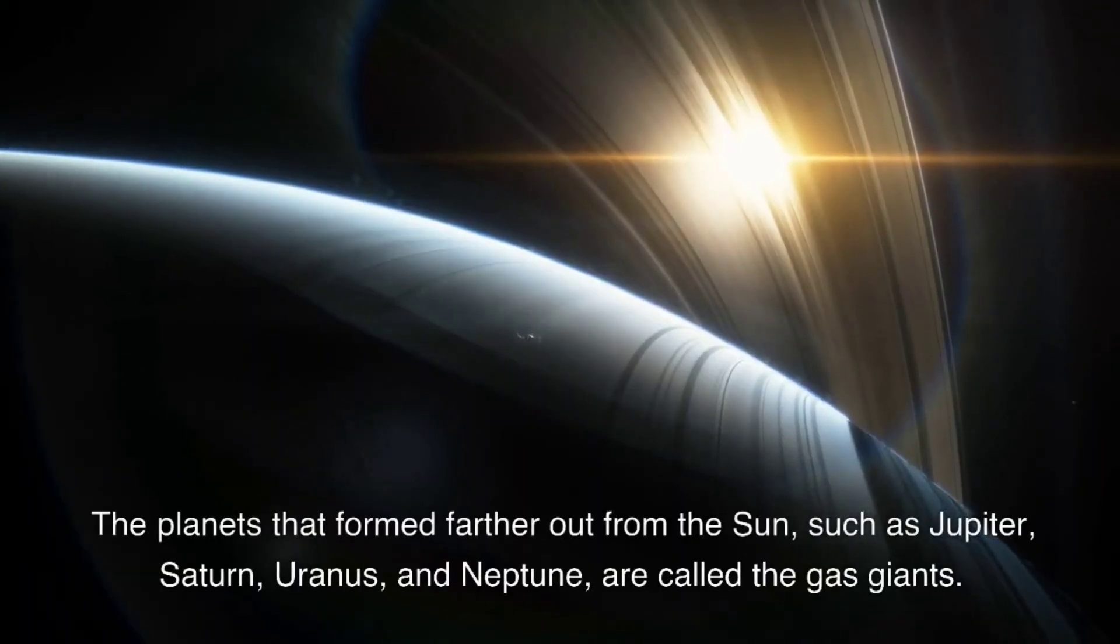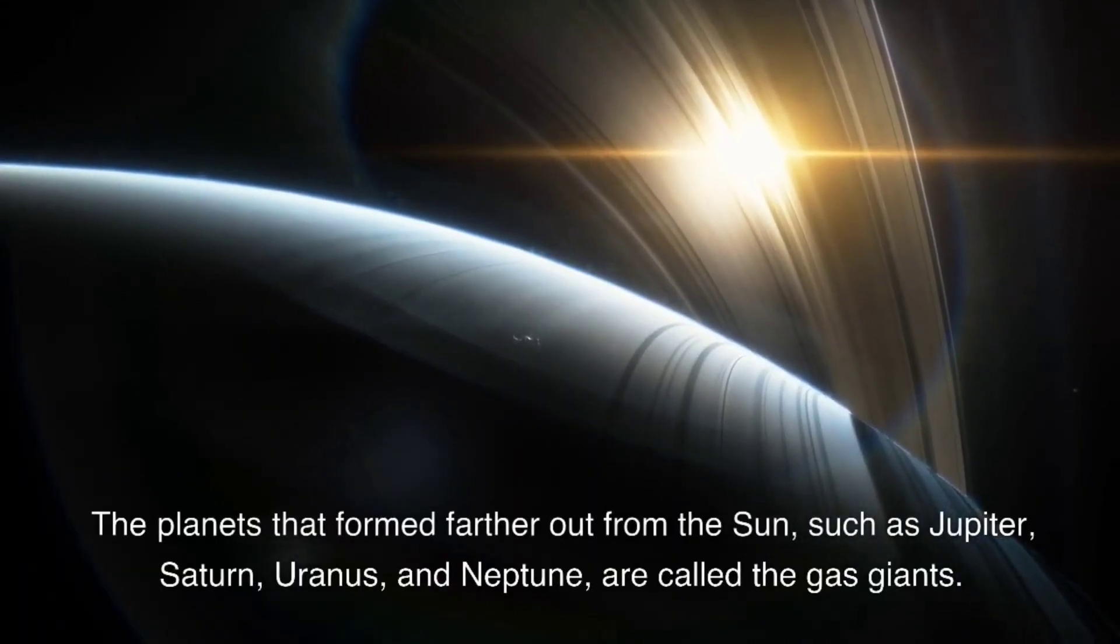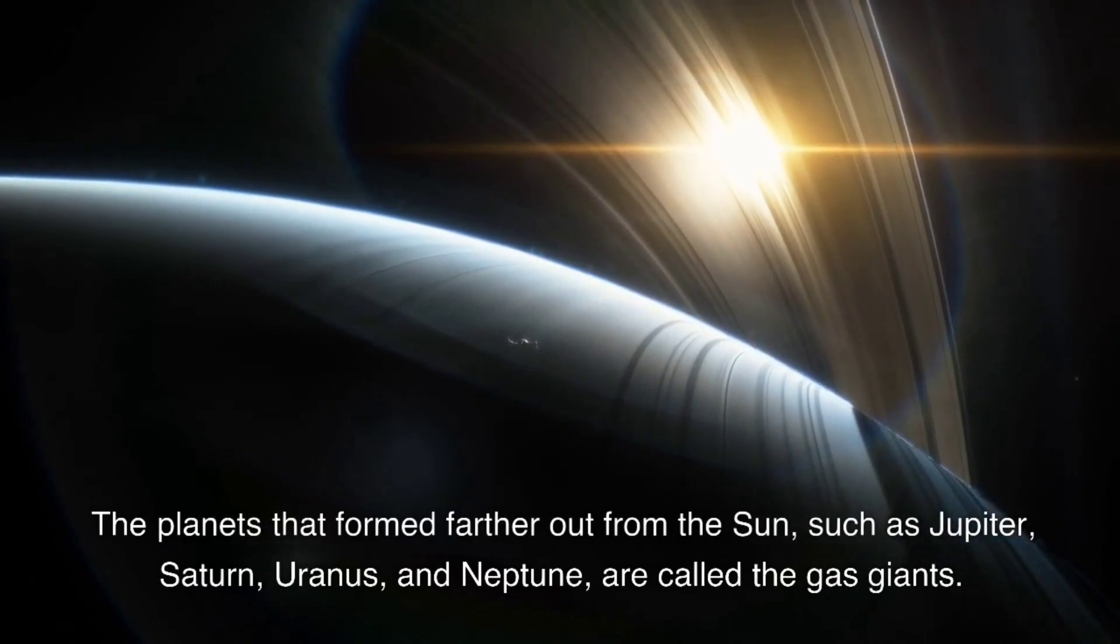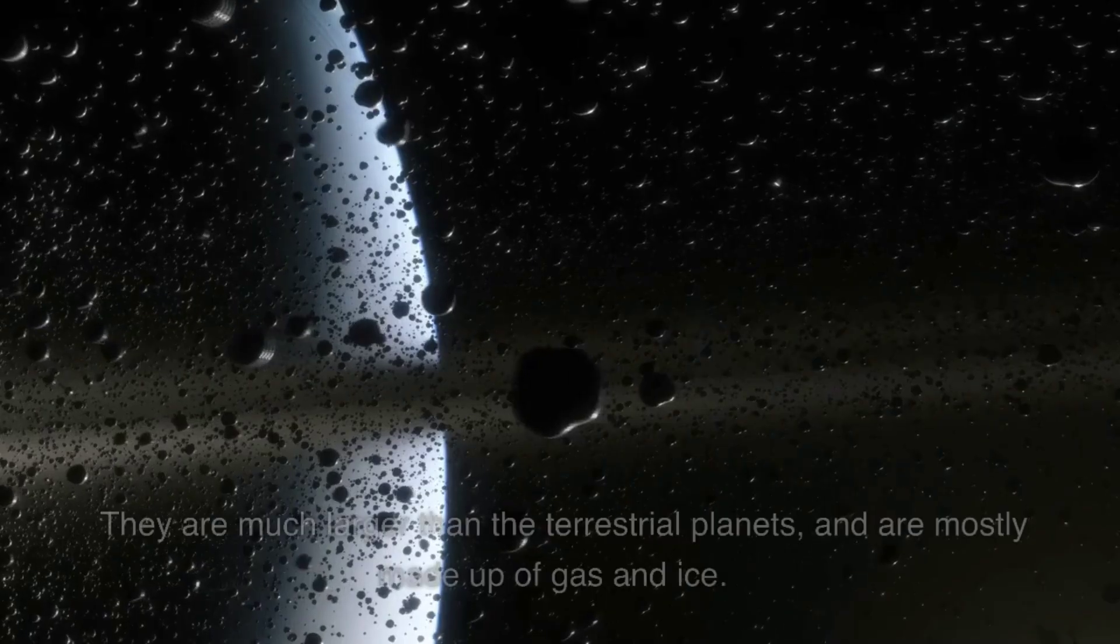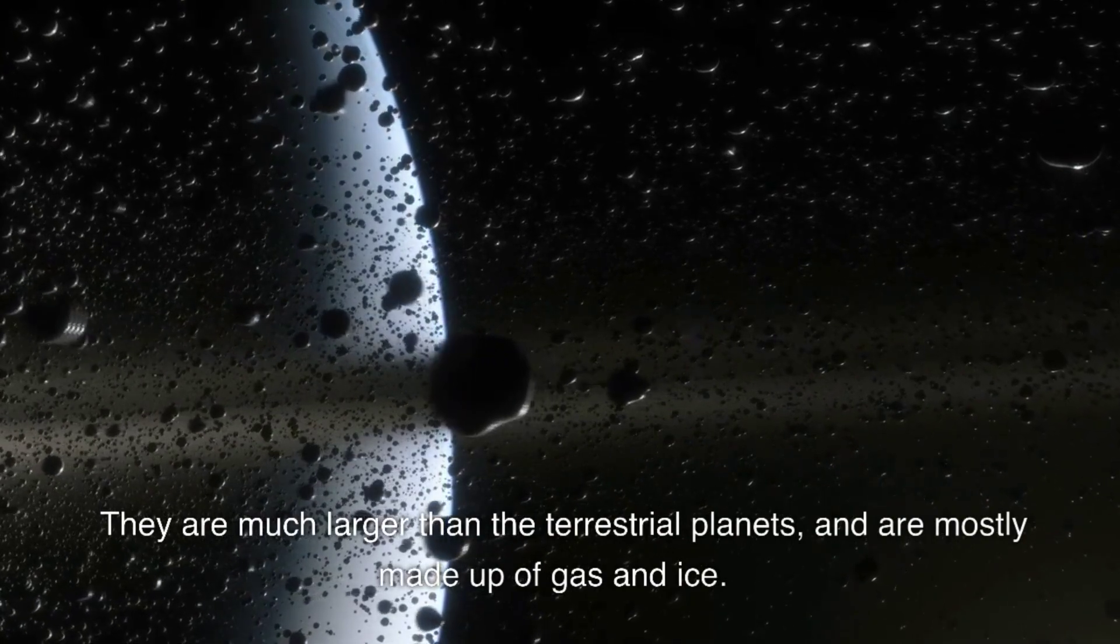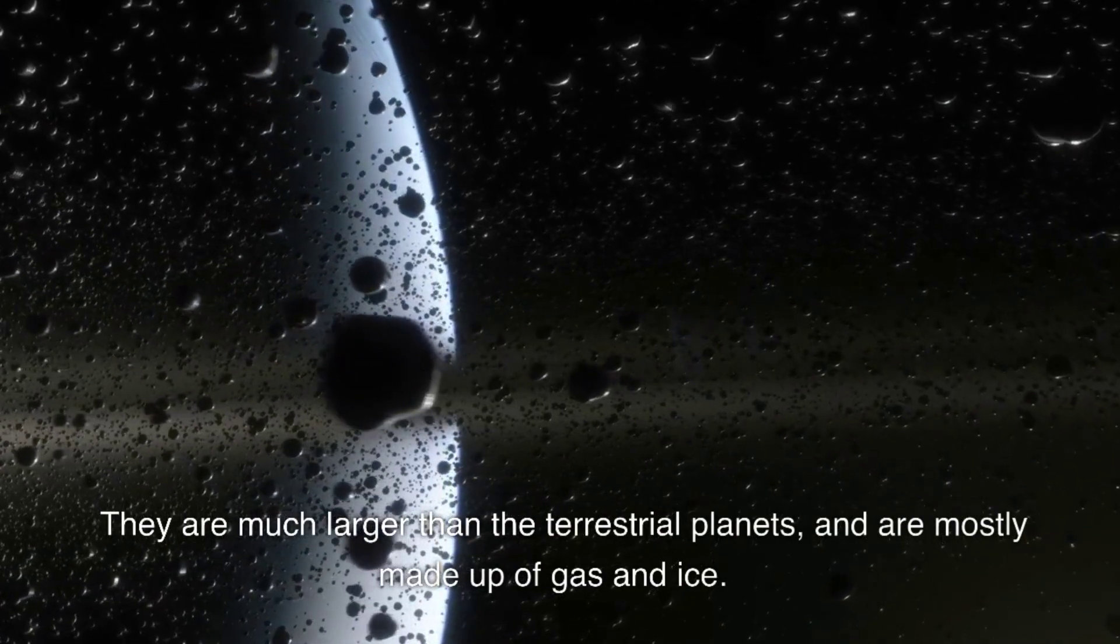The planets that formed farther out from the sun, such as Jupiter, Saturn, Uranus, and Neptune, are called the gas giants. They are much larger than the terrestrial planets and are mostly made up of gas and ice.